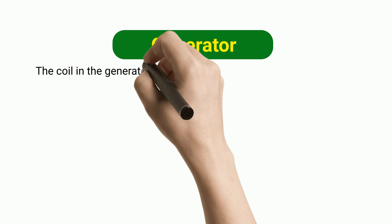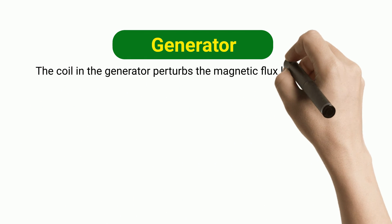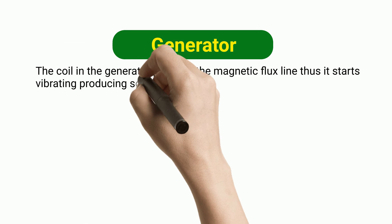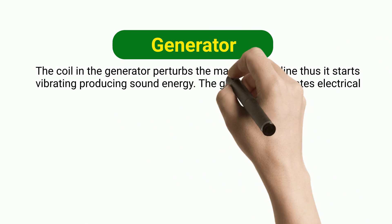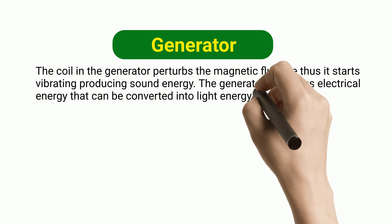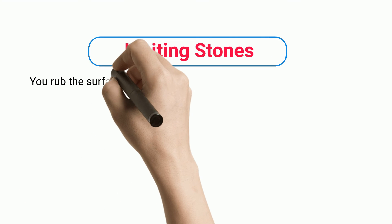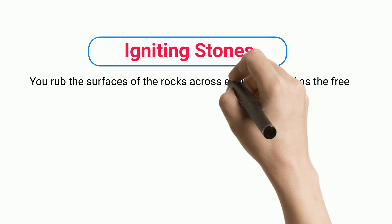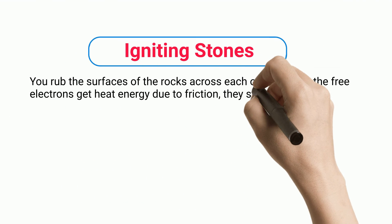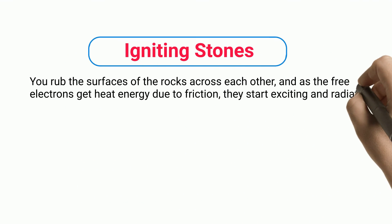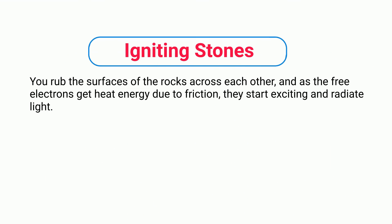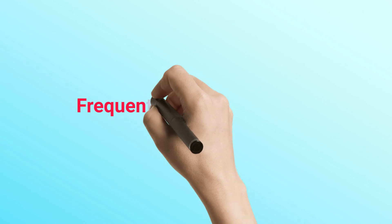Generator: The coil in the generator perturbs the magnetic flux lines, causing it to vibrate and produce sound energy. The generator generates electrical energy that can be converted into light energy. Igniting stones: When you rub the surfaces of rocks against each other, the free electrons gain heat energy due to friction, start exciting, and radiate light.